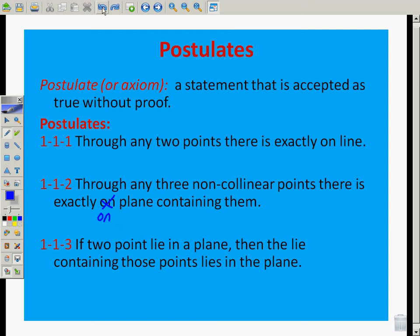If two points lie in a plane, then the line containing them, containing those points, lies in the plane. So if they're in a plane, and there's a line between them, it has to be in the plane as well.